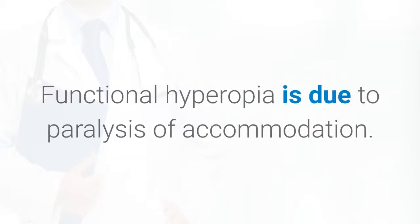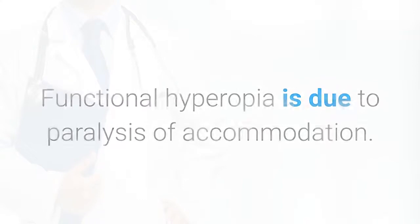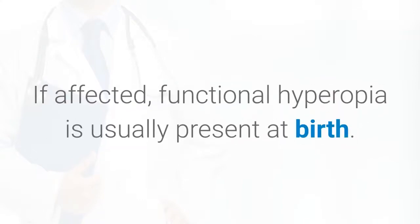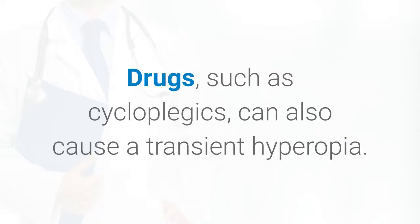Functional hyperopia is due to paralysis of accommodation. If affected, functional hyperopia is usually present at birth. Drugs such as cycloplegics can also cause a transient hyperopia.